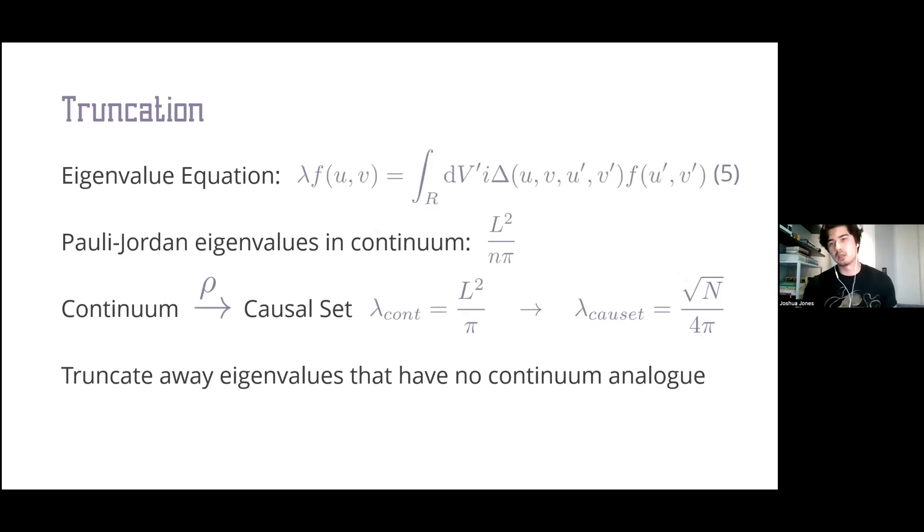To understand the action of the truncation scheme, we first turn to the eigenfunction equation of the Pauli-Jordan operator in the continuum, equation 5. Upon solution, the Pauli-Jordan eigenvalues are of the form l² over nπ. We can translate this into causal set-friendly units by multiplying by ρ, the causal set density. The minimum eigenvalue from the continuum, l² over π, corresponds to root n over 4π in the causal set.